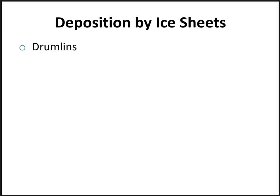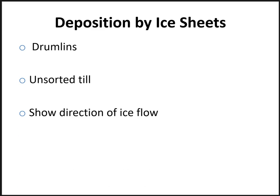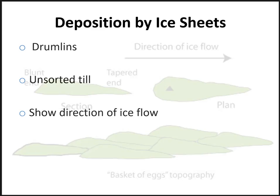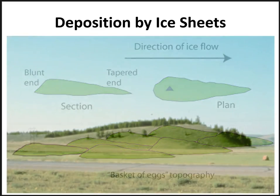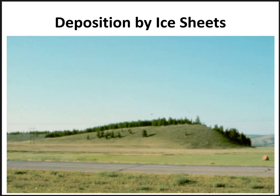Sometimes glaciers can produce elongated hills called drumlins during their deposition. Drumlins are simply unsorted glacial till, and they show the direction in which the ice was flowing. The blunt end of the drumlin indicates the direction from which the ice came. Here is a side view of a drumlin where the ice was flowing from right to left, because the right side is the more blunt end.